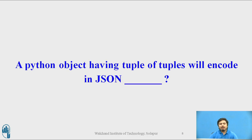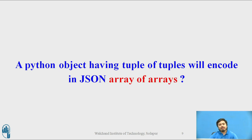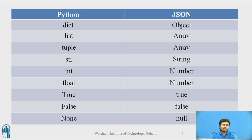As a quick reflection question: a Python object having a tuple of tuples will encode into JSON as what? You can pause and think about the answer. The answer is it gets converted into an array of arrays, because we saw that a tuple converts into a JSON array — so a tuple of tuples becomes an array of arrays.